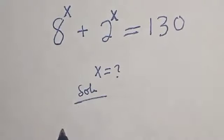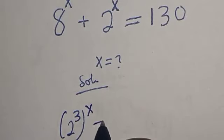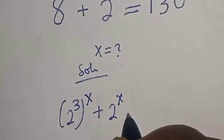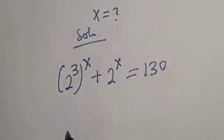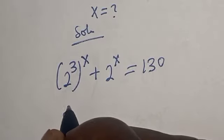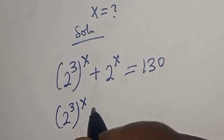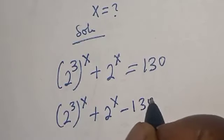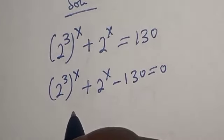8 to the power of s can be written as 2 raised to the power 3, raised to the power s, plus 2 raised to the power s is equal to 130. Then, bringing terms together, we have 2 raised to power 3 raised to power s plus 2 raised to power s minus 130 is equal to 0.